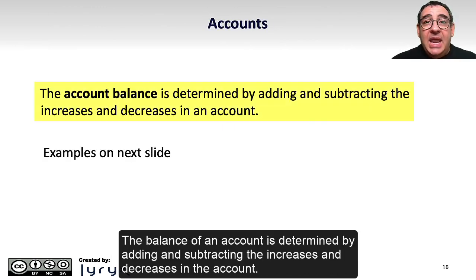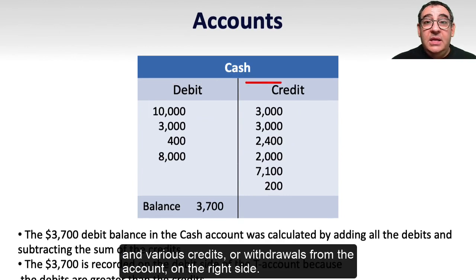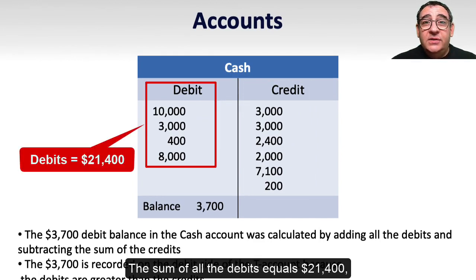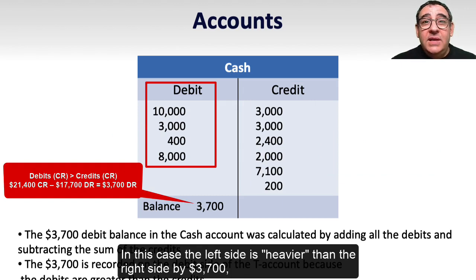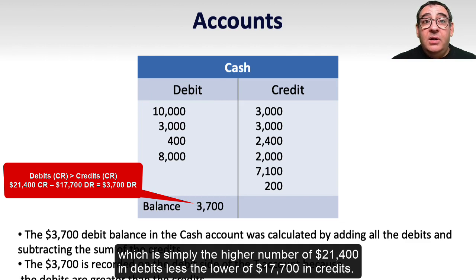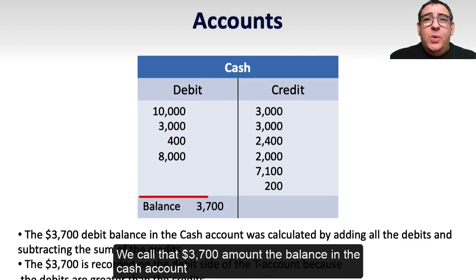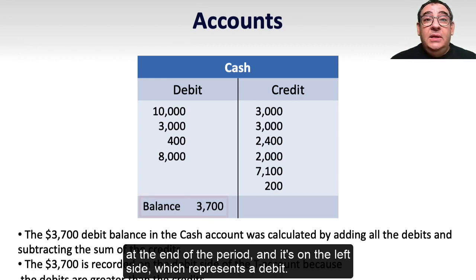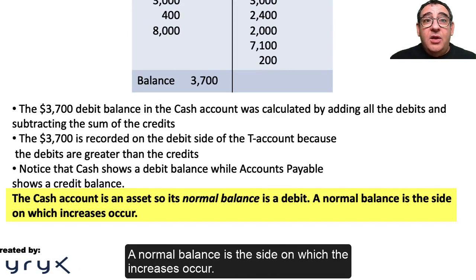The balance of an account is determined by adding and subtracting the increases and decreases in the account. For example, here's a T-account for cash showing various debits or increases on the left side and various credits or withdrawals on the right side. The sum of all the debits equals $21,400 and the sum of all the credits equals $17,700. The left side is heavier than the right side by $3,700, which is simply $21,400 in debits less $17,700 in credits. We call that $3,700 the balance in the cash account at the end of the period, and it sits on the left side, representing a debit. The cash account is an asset, so its normal balance will always be a debit. A normal balance is the side on which the increases occur.